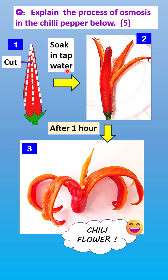Next, soak the chili in tap water. After about 30 minutes or more, you can see that it starts to curve upwards — the strips start to curve outward away from the center. After an hour or more, the chili strips are really curved upwards. This is the so-called chili flower that is used for decoration on food.